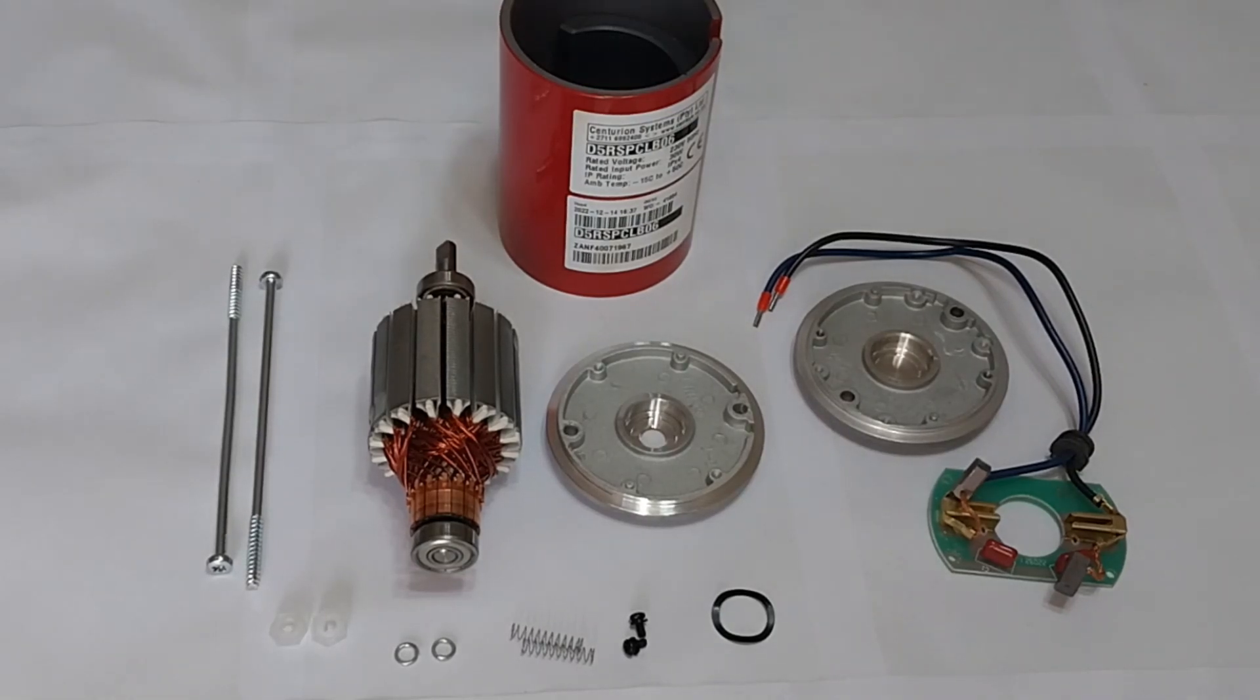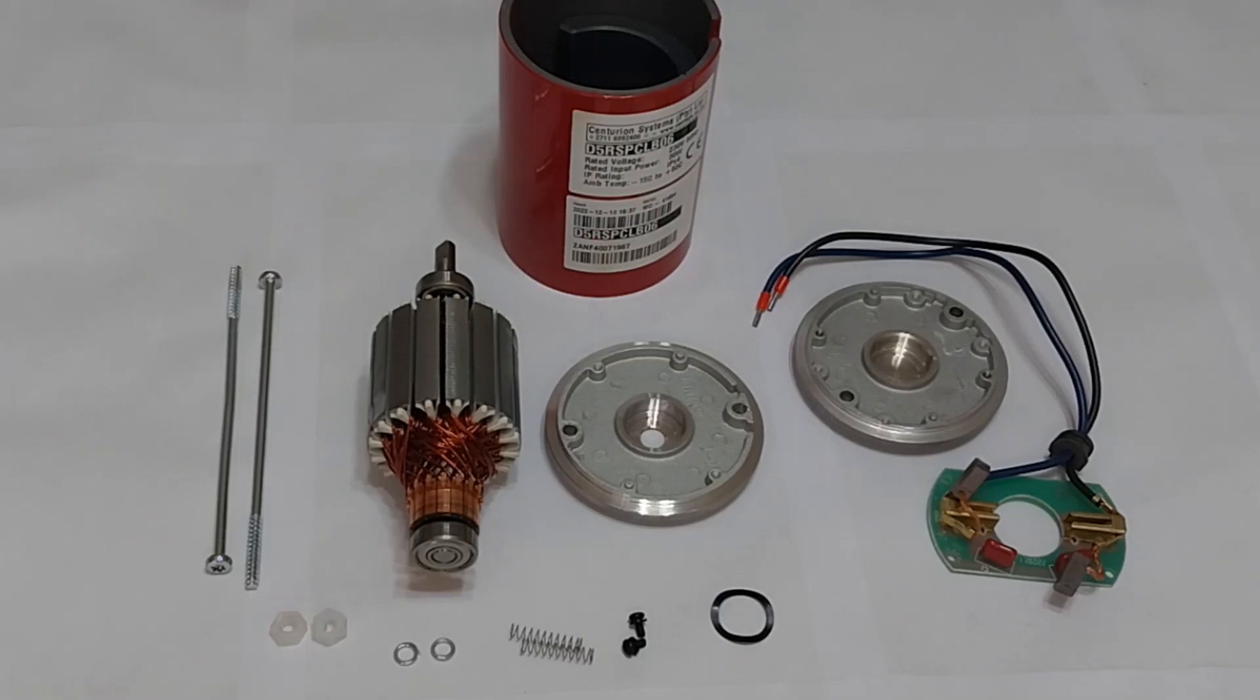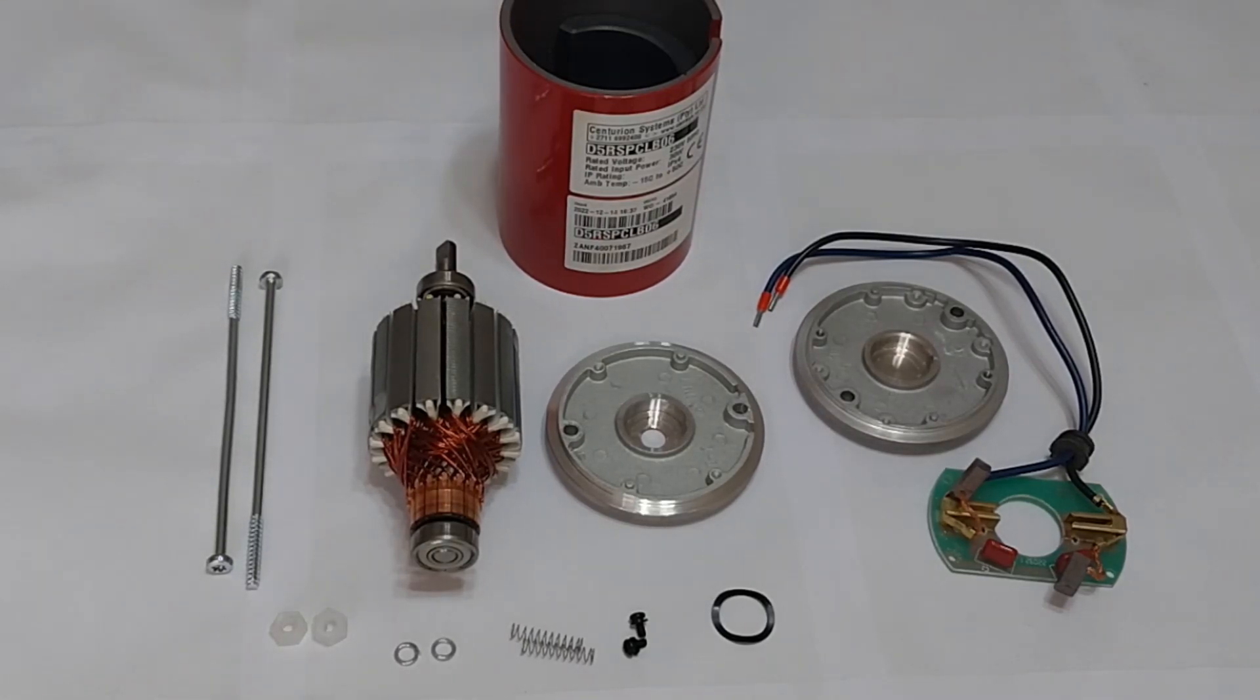Exploded view of the Centurion D5 EVO electrical motor. To the left we have the two Torex bolts that secure the gate motor into the base section. We have the armature which is fitted with two bearings, the magnet system at the back, then the front and rear cover plate. To the bottom right we have the gate motor brush system. In the front we have springs and screws which secure everything in place.